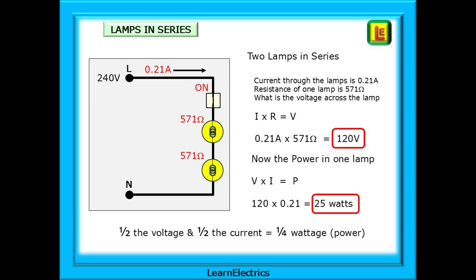Now, we should calculate the power or effective wattage of each lamp. The current through the lamp is 0.21 amps. The resistance of just one lamp is 571 ohms. What is the voltage across the lamp? We know that the voltage equals current multiplied by ohms. So 0.21 amps multiplied by 571 ohms is 120 volts. That is the voltage across each 120 volts. Now, calculate the power in each lamp. Voltage multiplied by current would give the power in watts. So, 120 volts multiplied by 0.21 amps is 25 watts.